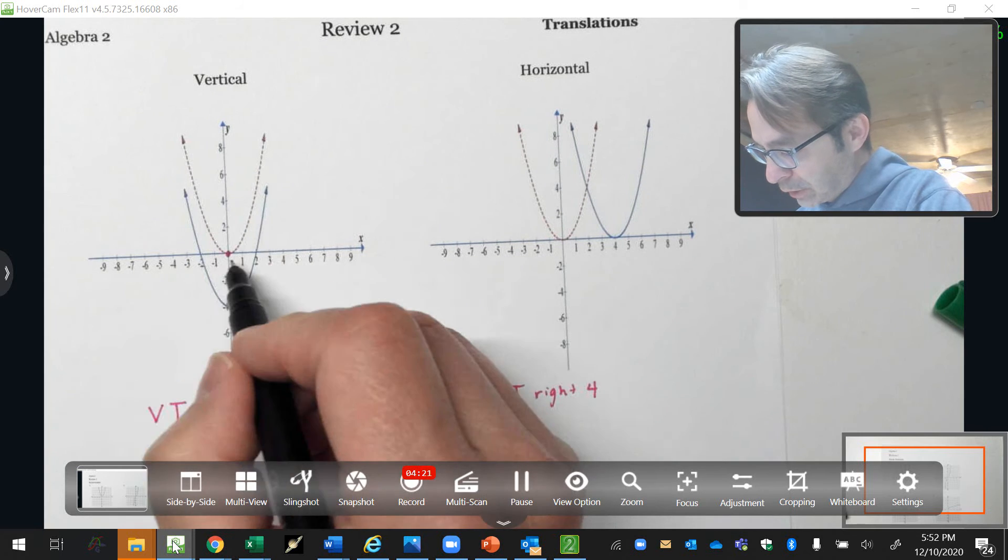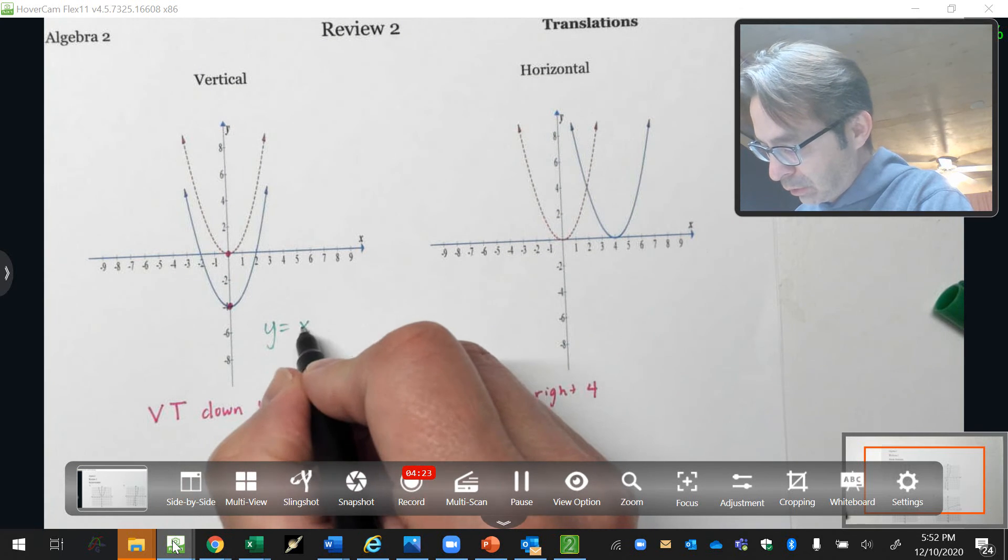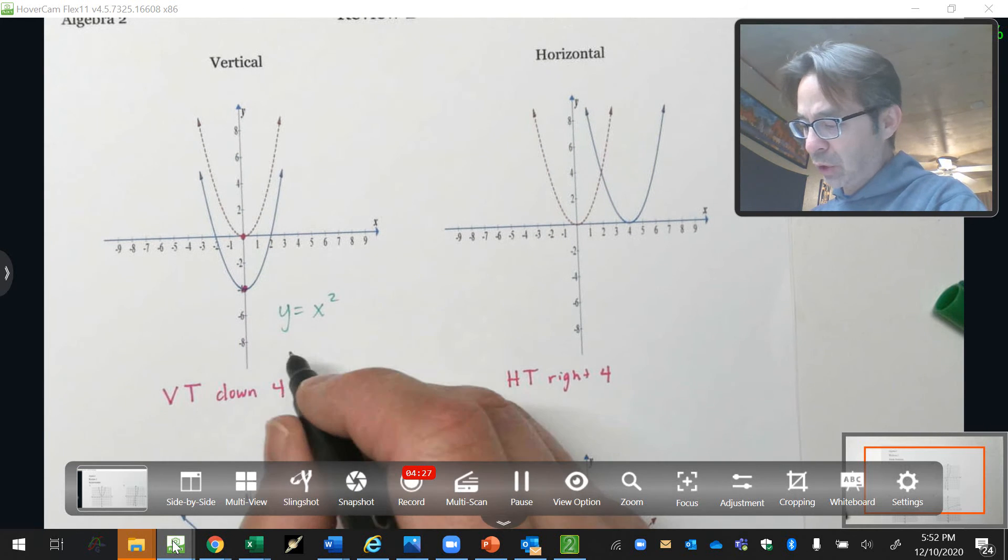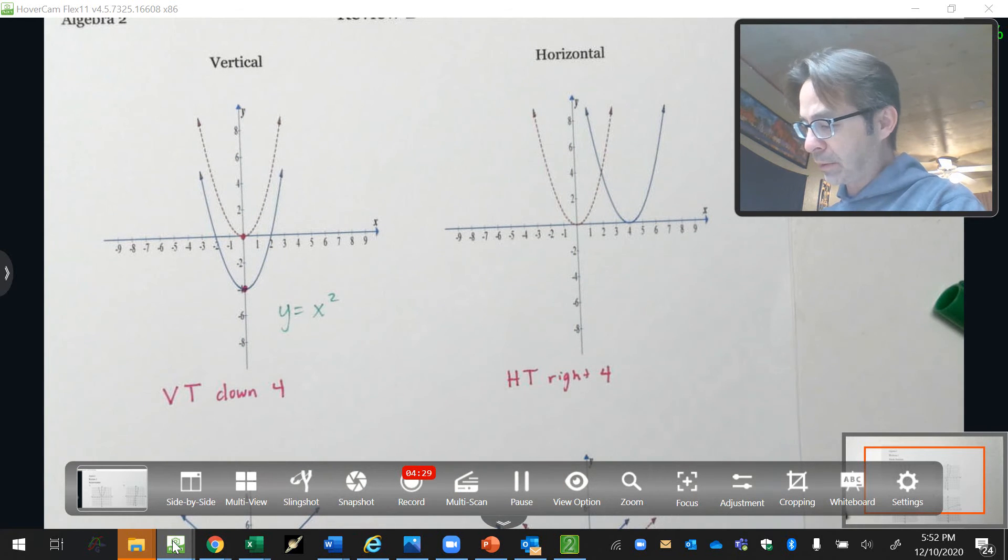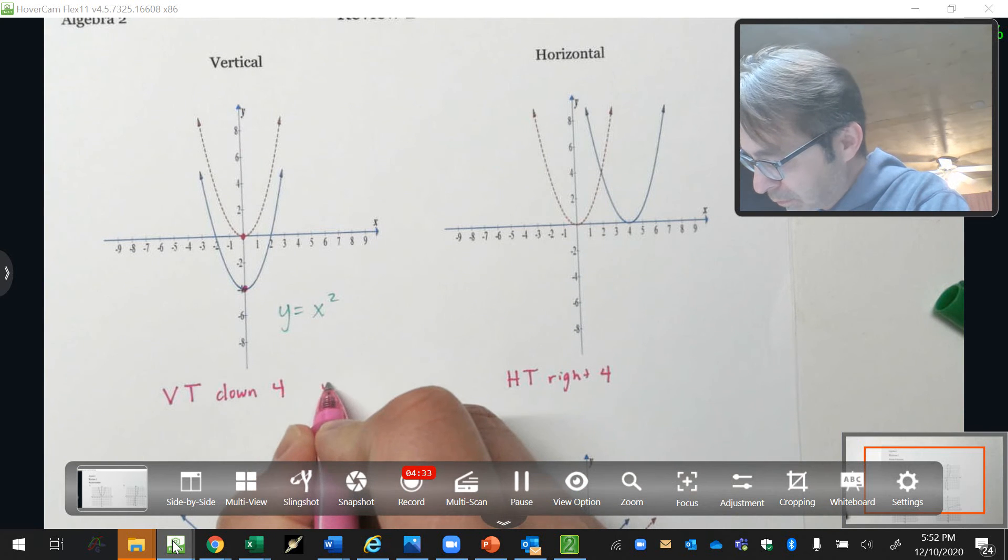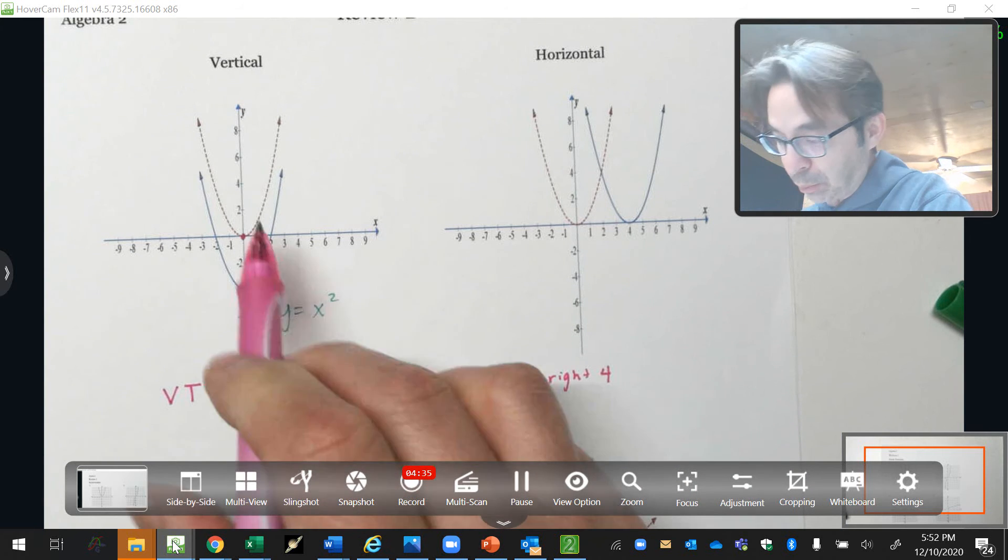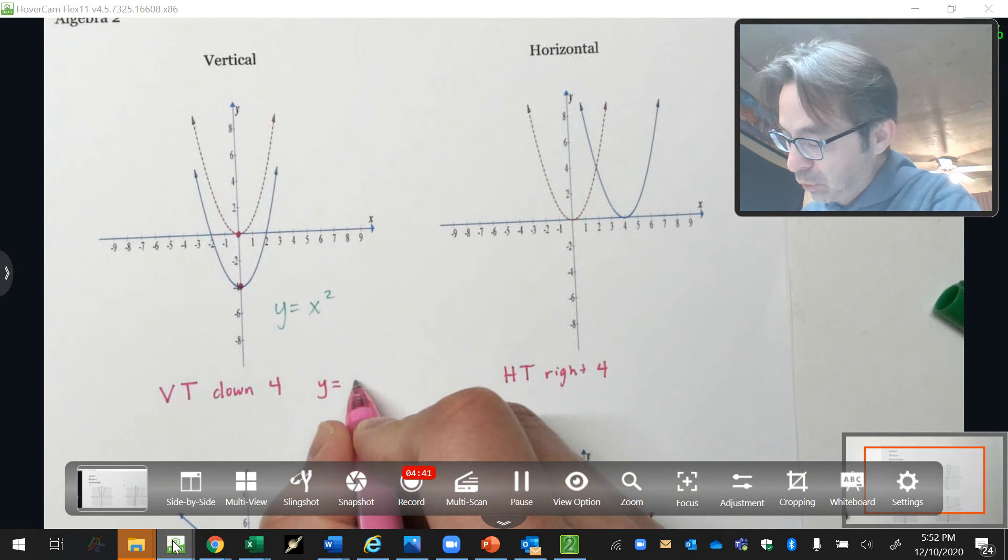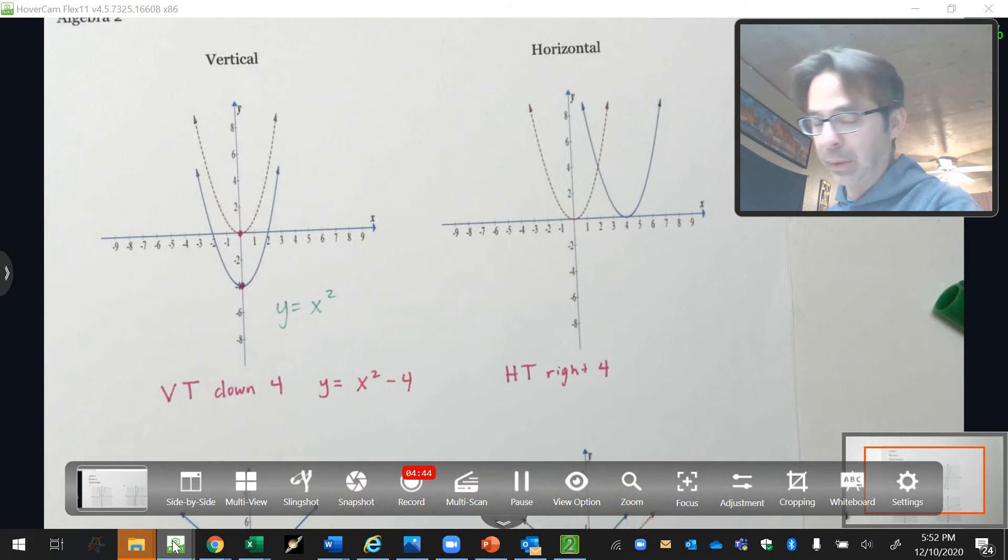Y equals, so the parent function is x squared. That's the parent function, we know that. The transformed function, I'm going to use pink. I probably should use red and blue, but I ain't got red and blue. So, it moved down four spaces. Down four.